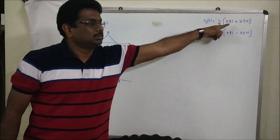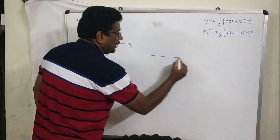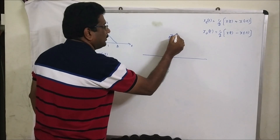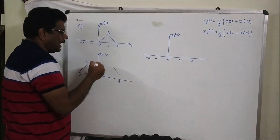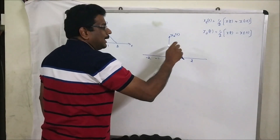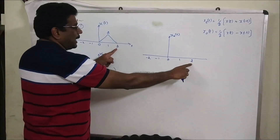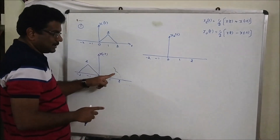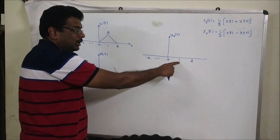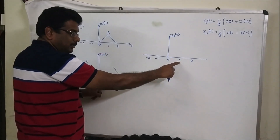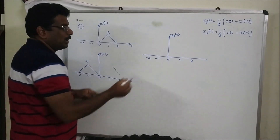Now x(t) is ready and x(-t) is ready by reflection. Add these two signals with respect to amplitude at each particular time, then divide the amplitude by 2. I am going to calculate x_e(t). The locations are the same. At location 2, the amplitude is 0 from both signals. 0 plus 0 divided by 2 equals 0. At location 1, one signal gives 2 and the other gives 0. 2 plus 0 is 2, divided by 2 is 1.